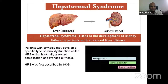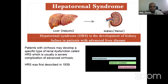Coming to hepatorenal syndrome — a patient with advanced cirrhosis may develop a specific type of renal dysfunction called hepatorenal syndrome, which is usually a severe complication of advanced cirrhosis. It was first described in 1939. Etiological factors include refractory ascites (the most common cause of type 2 HRS), dilutional hyponatremia, decreased cardiac index, spontaneous bacterial peritonitis, large volume paracentesis of greater than 5 liters without adequate albumin supplementation, nephrotoxic agents like NSAIDs, IV contrast drugs, or antibiotics, massive bleeding from esophageal varices, post-TIPS procedure, and diuretics.